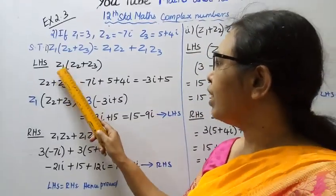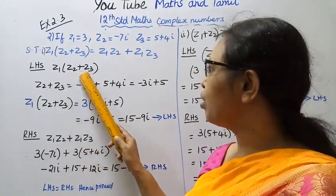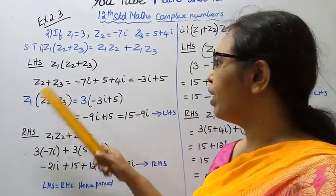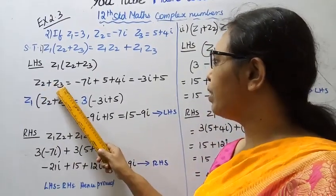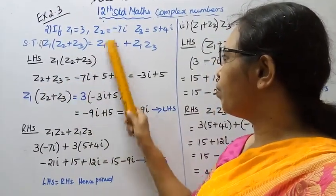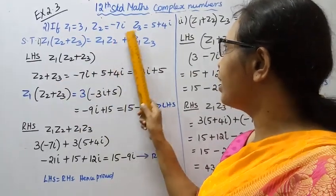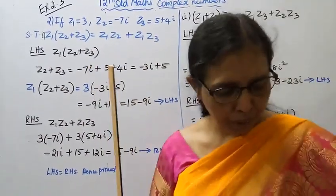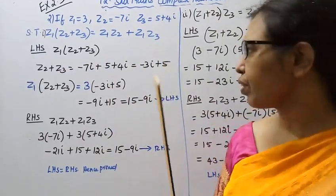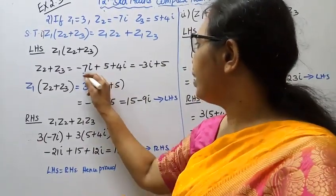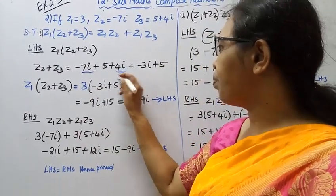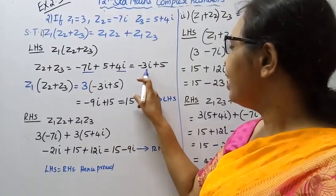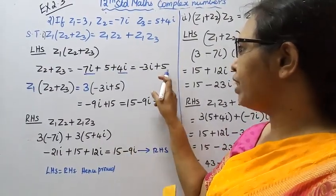Left hand side: Z1 bracket Z2 plus Z3. First, do with Z2 plus Z3. Z2 equal to minus 7i, Z3 equal to 5 plus 4i. We have to add the imaginary parts: minus 7i plus 4i equals minus 3i, plus 5. So Z2 plus Z3 equals 5 minus 3i.